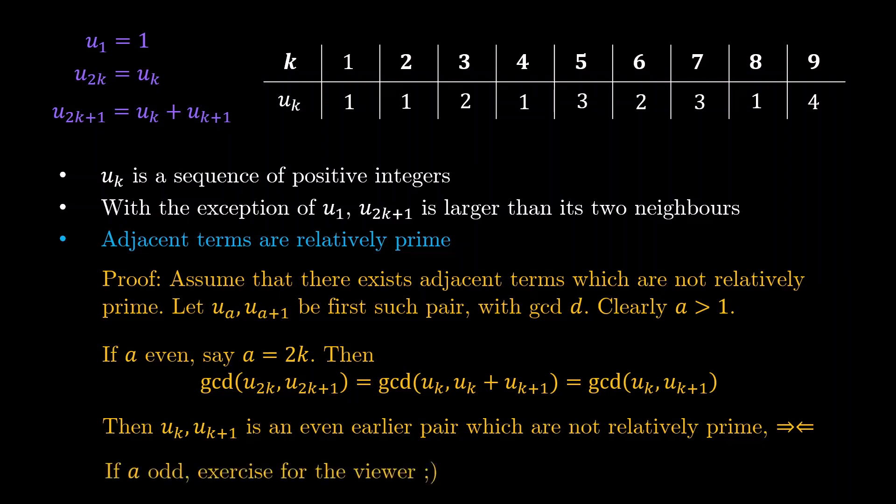Similarly, if a is odd, then we shall leave it as an exercise to the viewer. But a very similar proof actually applies. Now what does this statement tell us? This statement tells us that when we take the ratio of successive terms, we know that we will be given a rational number that is already in its reduced simplest form. Okay, we seem to be making some progress.